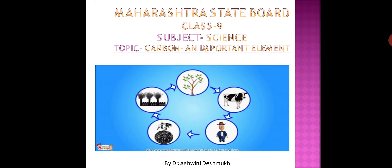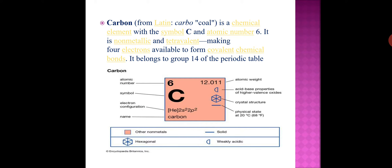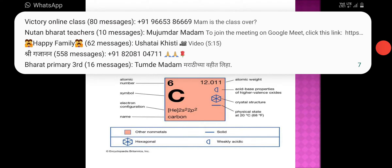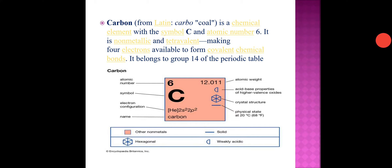The symbol of carbon is C, its atomic number is 6, atomic mass number is 12, valence is 4, and it is a non-metallic element. The element carbon is available abundantly in nature and occurs in free as well as in combined state.